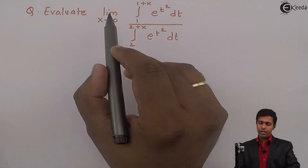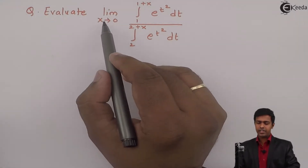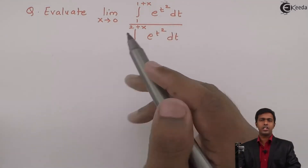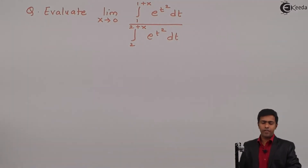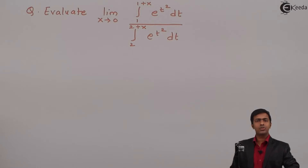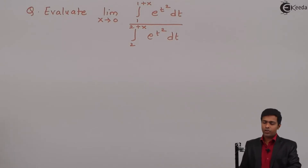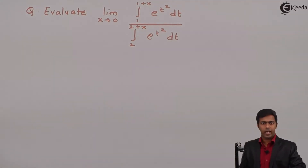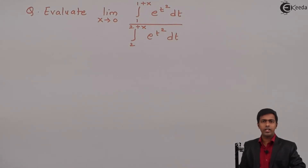Here we have limit x tends to 0 and we have the function in terms of t. So it is very difficult to substitute the given limit x→0. First of all we will try to bring the function in terms of x so that we can evaluate the limit.